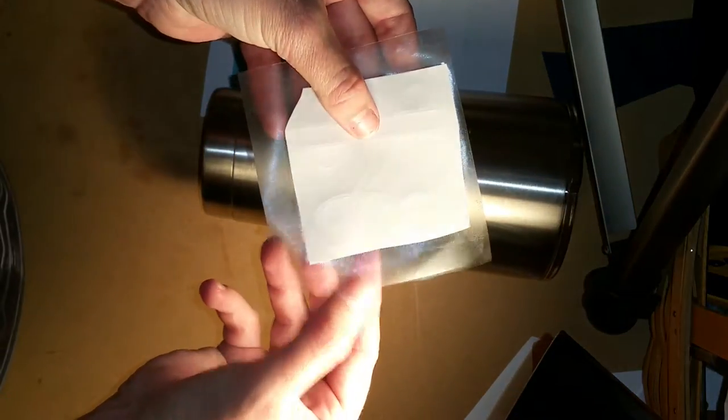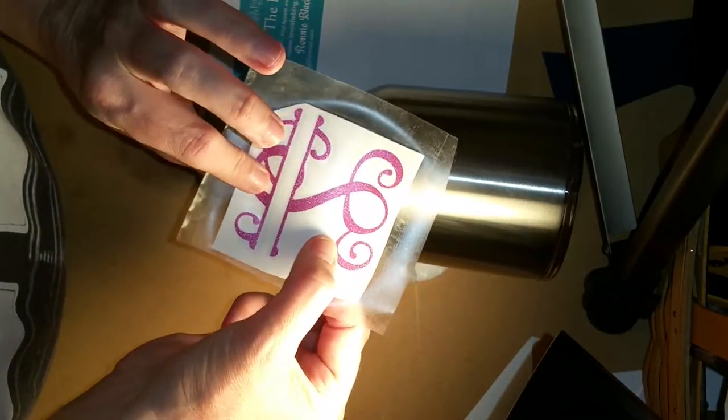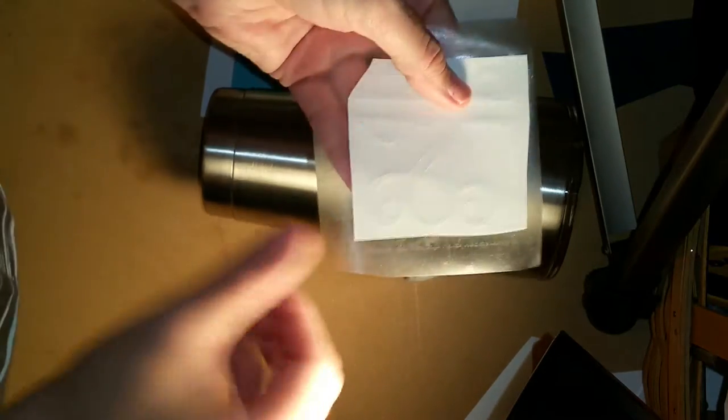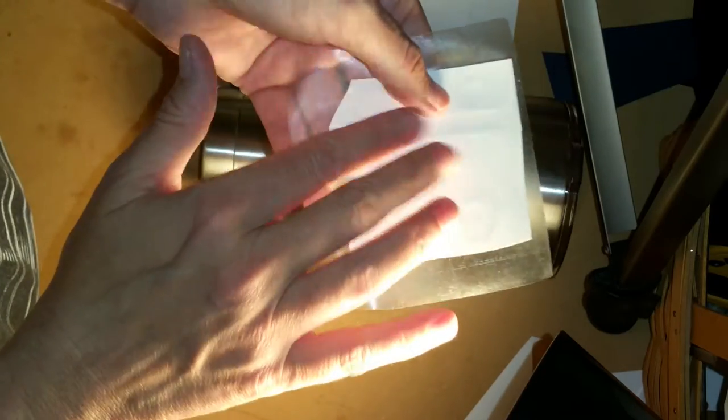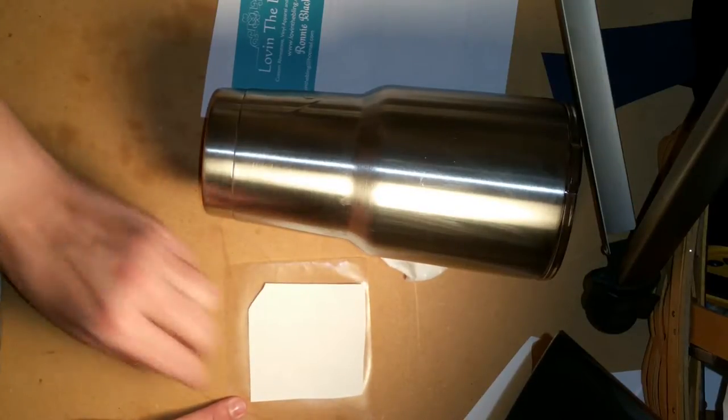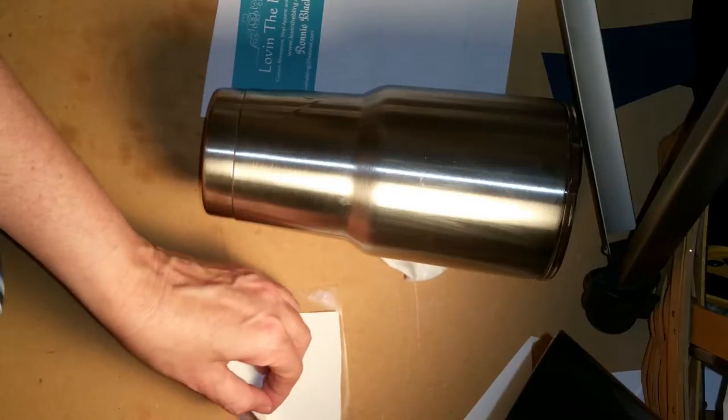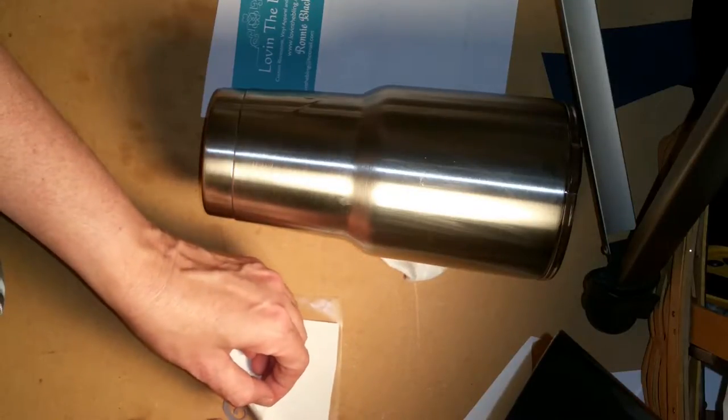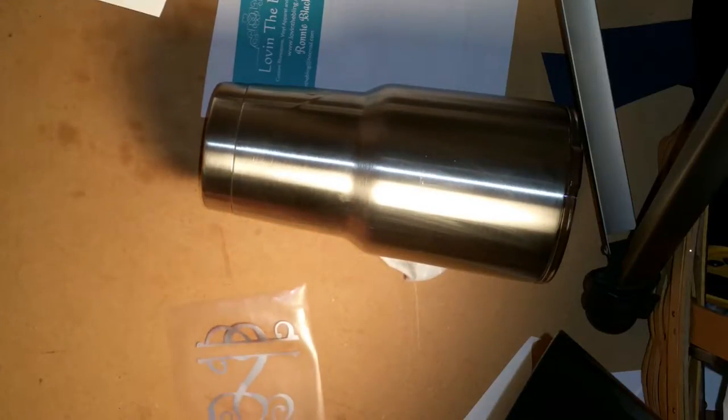When you do get it, taking the decal off and getting it ready for putting it on your mug. You want to have the harder part, not the vinyl, but the harder part close to you. Put it on a flat surface, put your finger down on it, and actually what you're going to lift is the hard cardstock part, where your decal should remain on the transfer tape, like so.